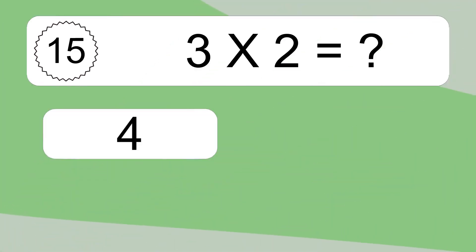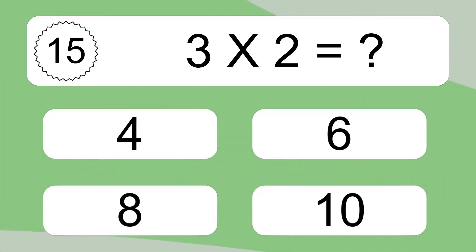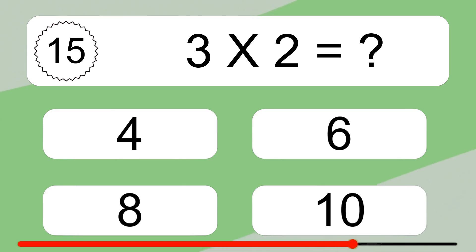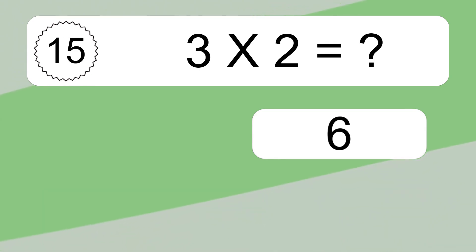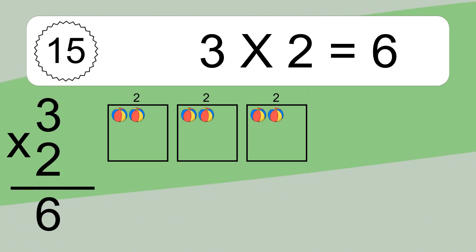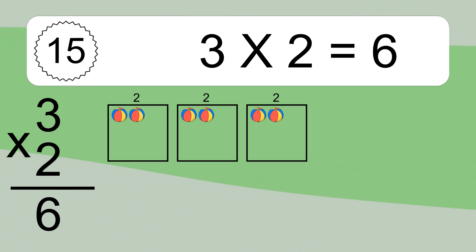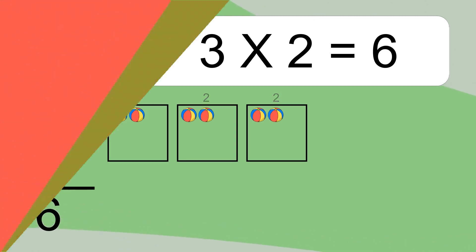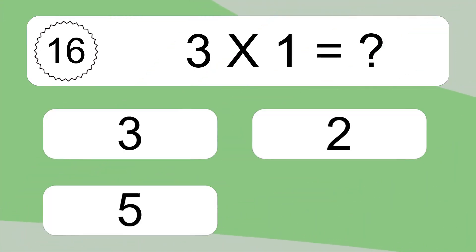3 times 2 equals what? 3 times 2 equals 6. We have 3 boxes, and each box has 2 colorful balls inside. If you count all the balls in all the boxes together, you will have 3 times 2 balls. This equals 6 balls.